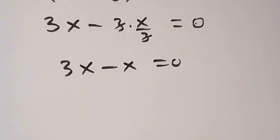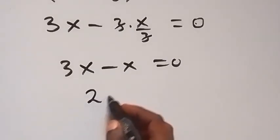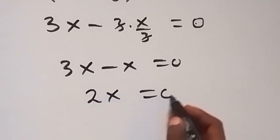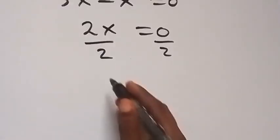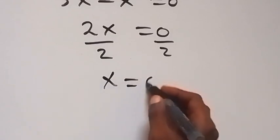From here, 3x minus x, that's 2x, which equals 0. When we divide both sides by 2, we have divide by 2 here and divide by 2 here. So from here, x equals 0.